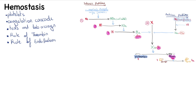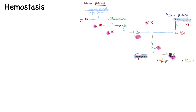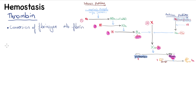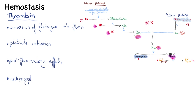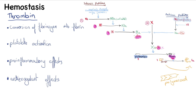Thrombin is quite important. Its four main roles are: conversion of fibrinogen into cross-linked fibrin, platelet activation, pro-inflammatory effects, and anticoagulant effects. For fibrin conversion, thrombin converts fibrinogen into fibrin monomers, which then polymerize into an insoluble clot. Thrombin also amplifies several coagulation factors — specifically factors 5, 8, 9, 11, and 13.